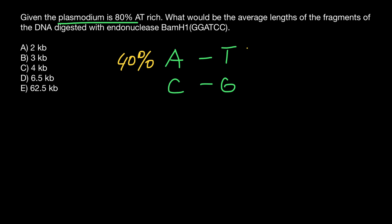And thymine, which base-pairs with adenine, also makes 40%, and together they make 80%. If these two bases make 80%, that means cytosine and guanine make another 20%: 10% cytosine and 10% guanine.